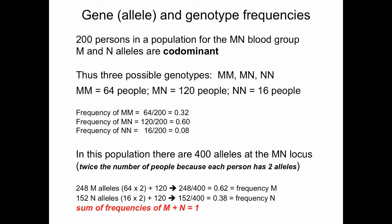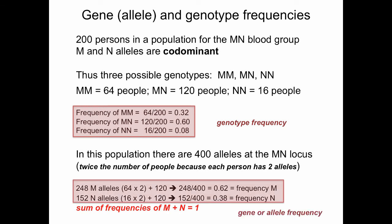In this population there are 400 alleles at the MN locus. There are 248 M alleles — 64 times 2 for MM, plus 120 for MN. The frequency of the M allele is 248 over 400, or 0.62. Likewise, the frequency of the N allele is 152 over 400, or 0.38. The sum of the frequencies of M plus N must equal one. This is the allele frequency, which is not the same as the genotype frequency.